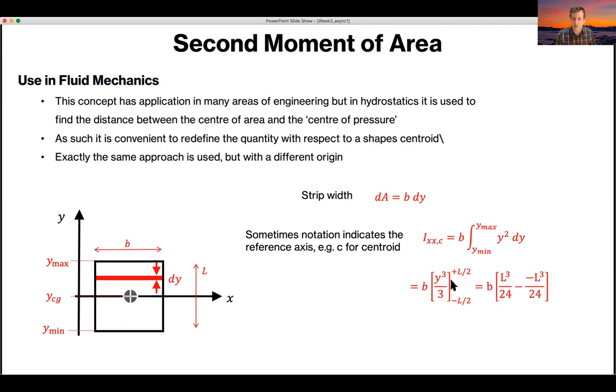So slightly different, you have to then substitute L over 2 cubed, L cubed over 2 to the power 3, 8 times 3, 24, and the same here, minus, and then minus, because it's cubed, L cubed over 24. So you're left with 2 over 24, which cancels to 1 over 12, b L cubed.